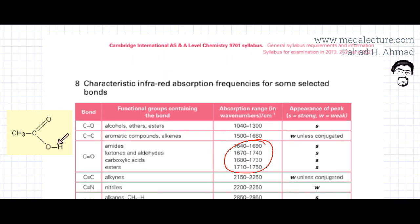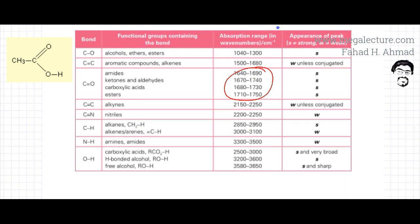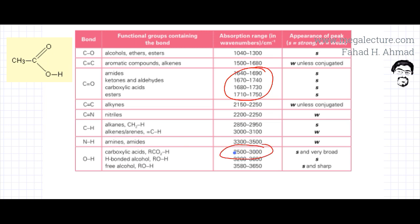Similarly, there is an OH bond, so let's find the OH bond in the data booklet. The OH bond absorption range is given — we have an OH bond in carboxylic acid specifically, and that has an absorption frequency around 2,500 to 3,000. The peak is going to be very strong and also very broad, which means the spectrum would have a lot of frequencies absorbed in a very broad absorption.